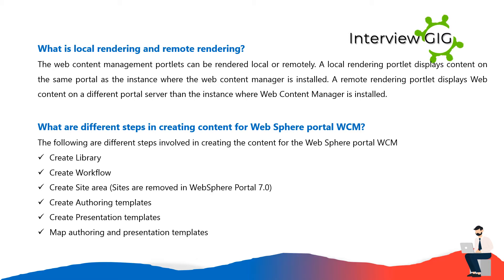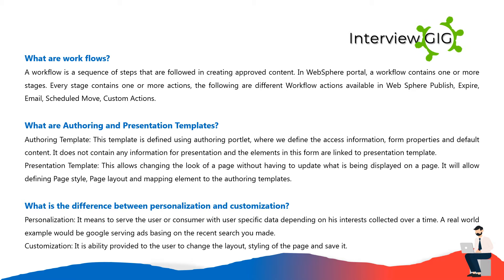The steps involved in creating content for WebSphere Portal WCM are: create a library, create a workflow, create a site area (sites were removed in WebSphere Portal 7.0), create authoring templates, and create presentation templates. A workflow is a sequence of steps followed in creating approved content; it contains one or more stages, and every stage contains one or more actions. Different workflow actions available include: publish, expire, email, scheduled move, and custom actions.